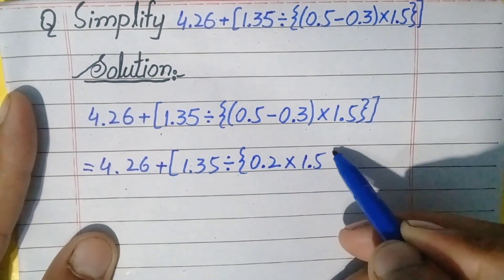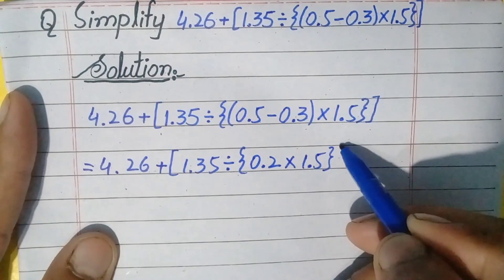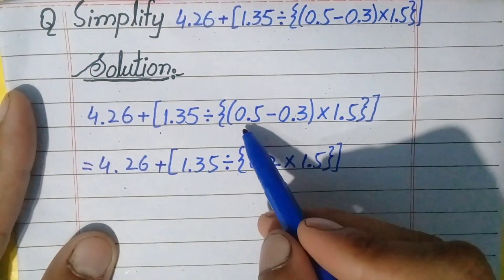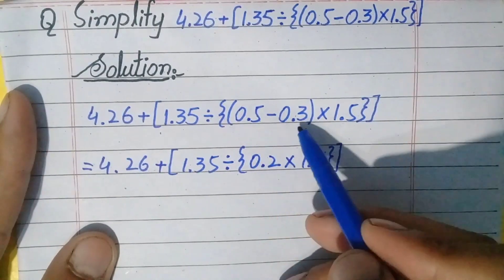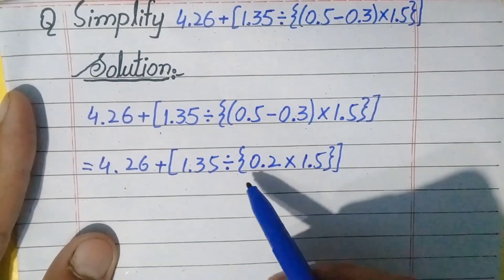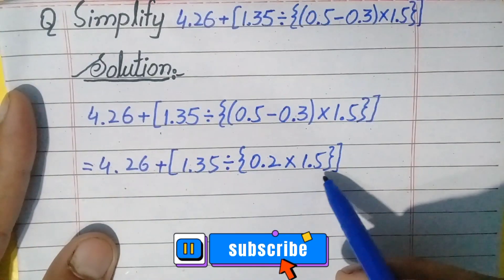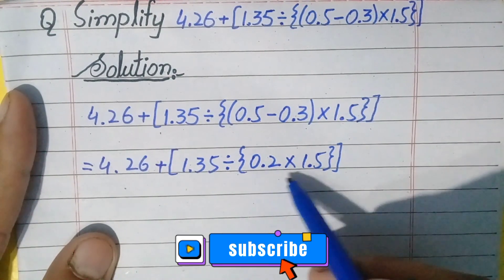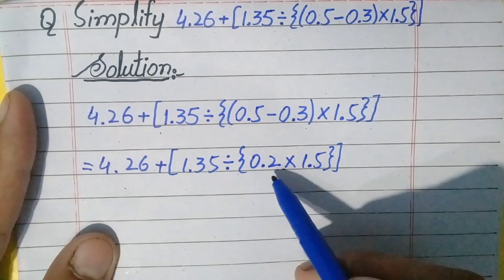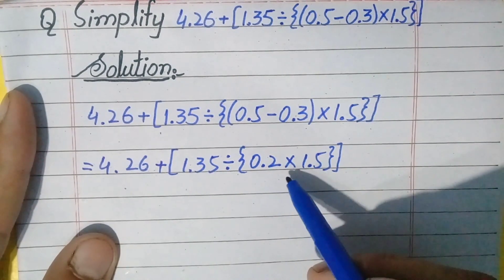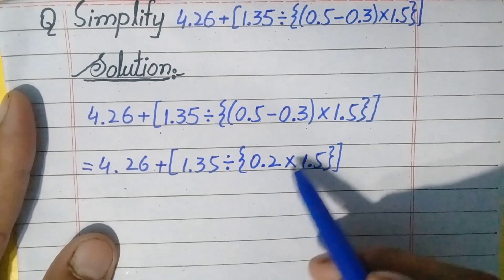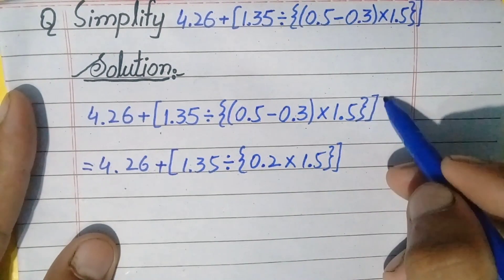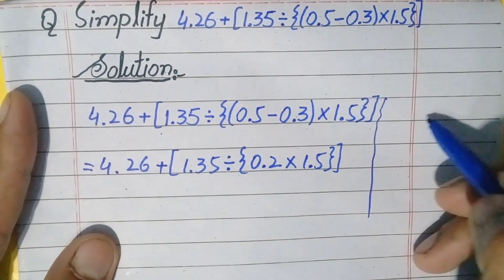From this step the parentheses are eliminated. Now we will try to eliminate the braces. What is inside the braces is the multiplication of these two numbers. We will do the multiplication in the rough work and write the answer in the solution.